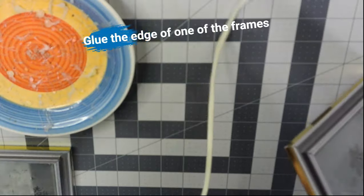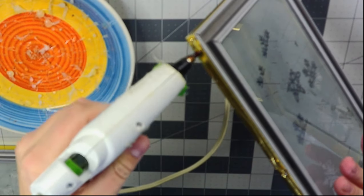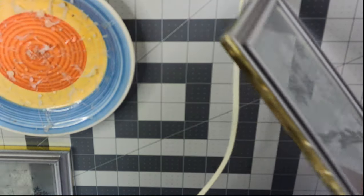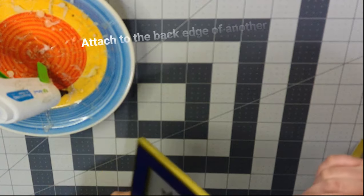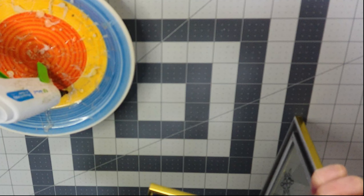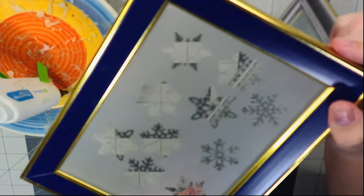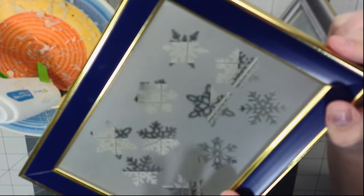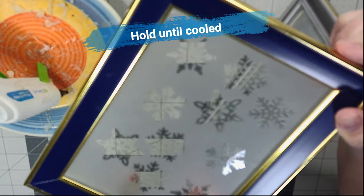You are going to take your hot glue gun and you are going to glue one of the edges of the frame. Then you are going to attach this to the second frame on the back, right up against the edge. You want a nice clean corner. Be sure to hold them together until your glue has cooled and they are stable.